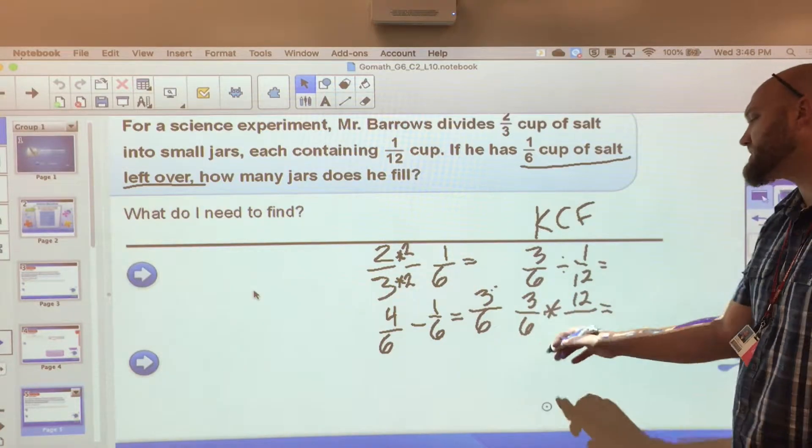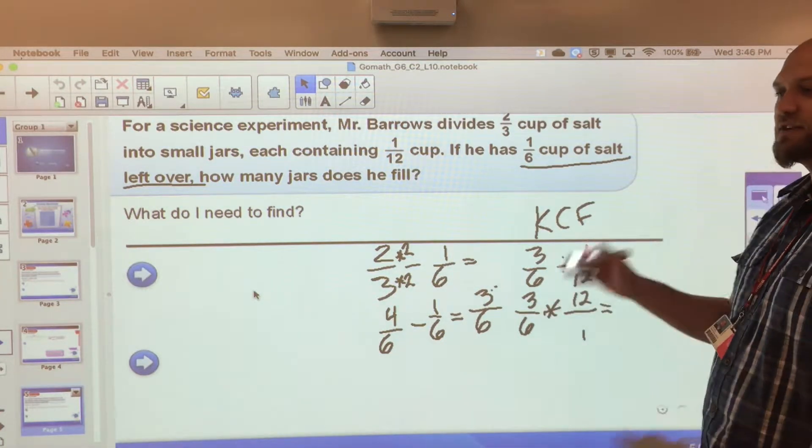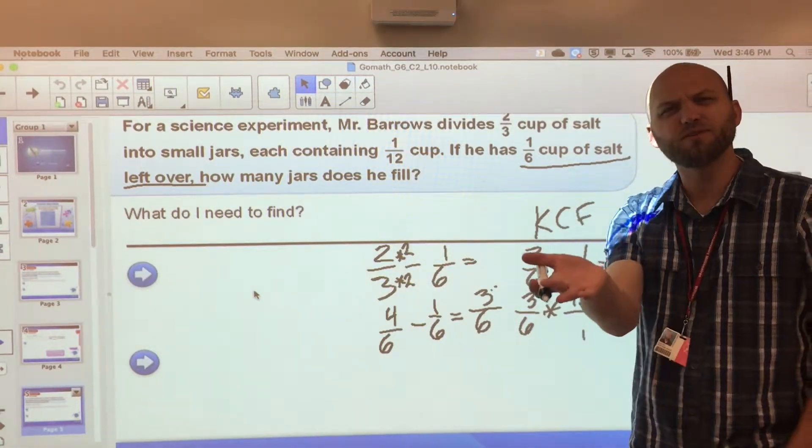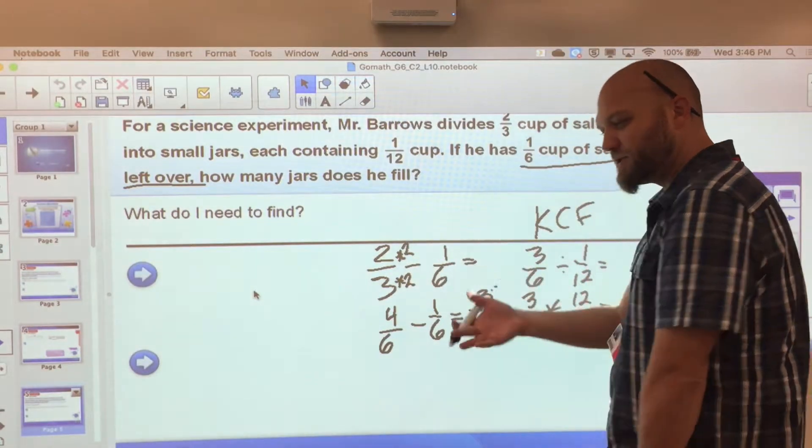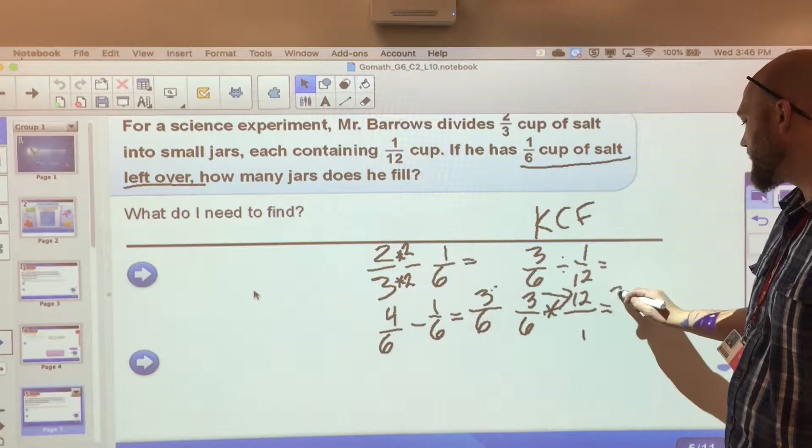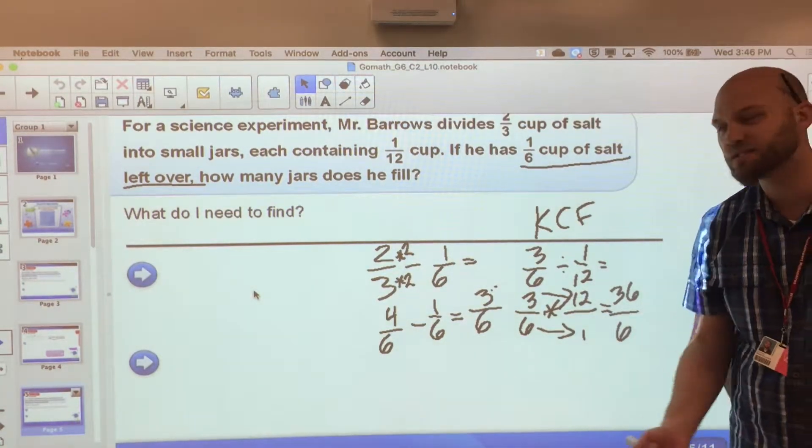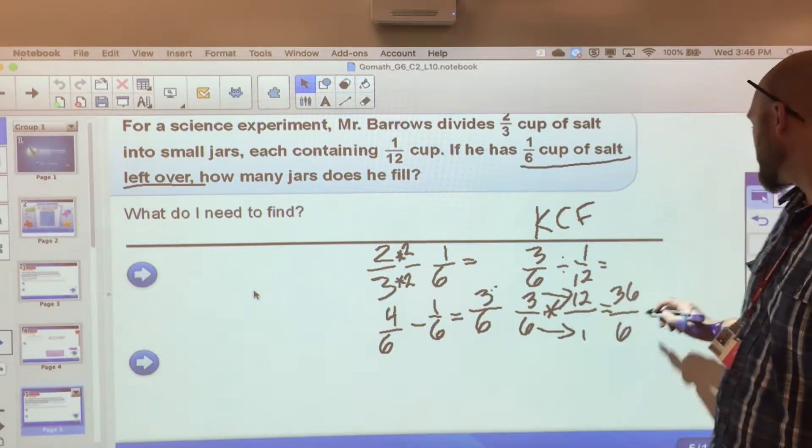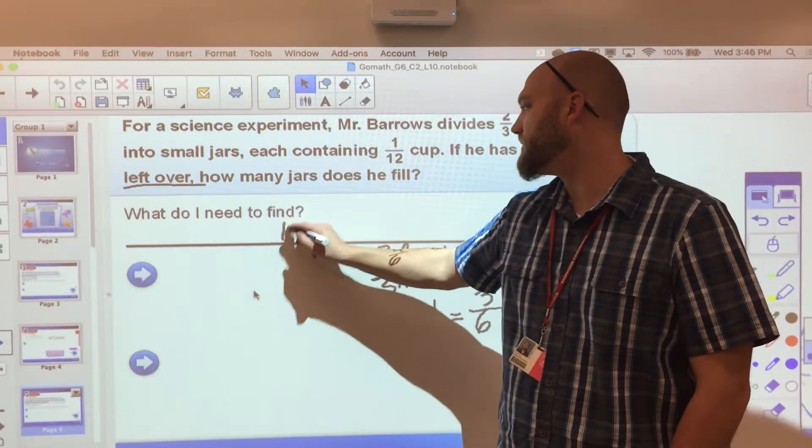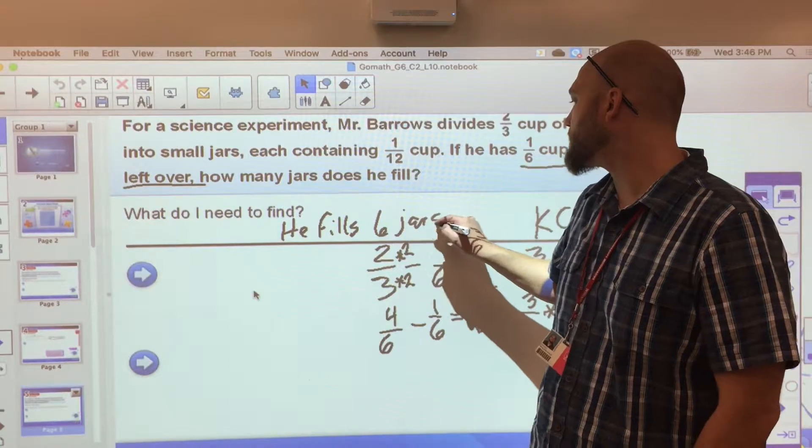I would come right across. Now you could simplify both three and six, and that would simplify down to one-half, and then two and twelve would simplify again. But for the sake of the problem, and honestly because most students somehow seem to enjoy multiplying and then simplifying, we're going to do that. Three times twelve is thirty-six and six times one is six. What is thirty-six divided by six? Of course it is six. So how many jars does he fill? He fills six jars.